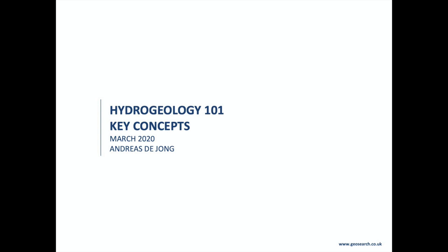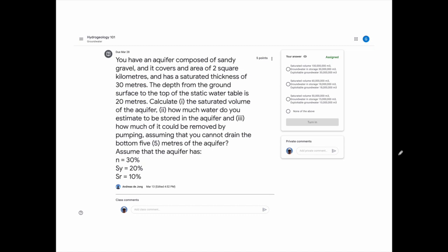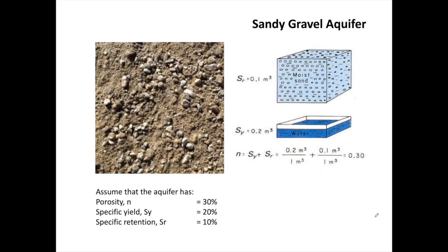Welcome to Hydrogeology 101 Key Concepts. We have a question here which is designed to illustrate some of the concepts of storage in an unconfined aquifer. You have an aquifer composed of sandy gravel. It covers an area of about 2 square kilometers with a saturated thickness of 30 meters. The aquifer has a porosity of 30%, a specific yield of 20%, and a specific retention of 10%.